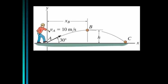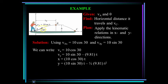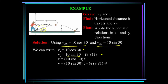Here a boy is kicking a ball with a velocity of 10 meters per second at an angle of 30 degrees. We want to find the velocity at point C and how far it travels. The velocity in the x direction is 10 times cosine 30, and the initial velocity in the y direction is 10 times sine 30. As a function of time: the x velocity is constant at 10 cosine 30; the y velocity is 10 sine 30 minus 9.81t; x equals the x velocity times time; and y equals the initial y velocity times time minus one-half gt squared.